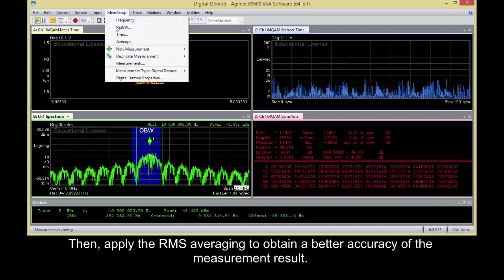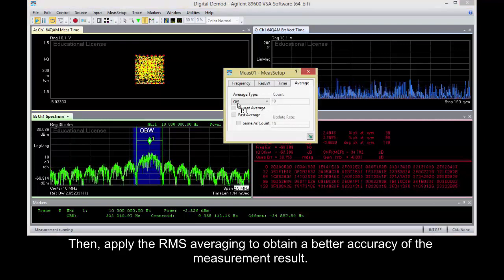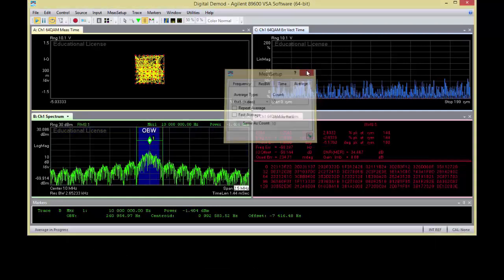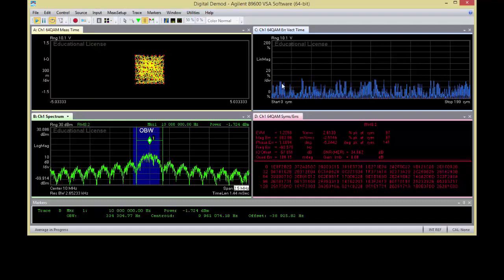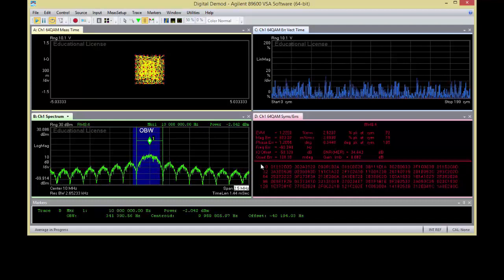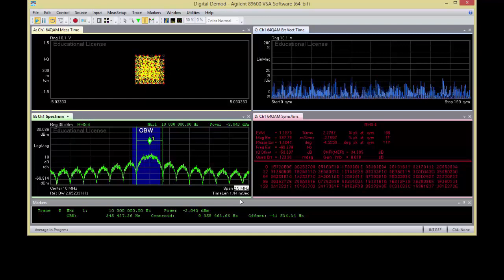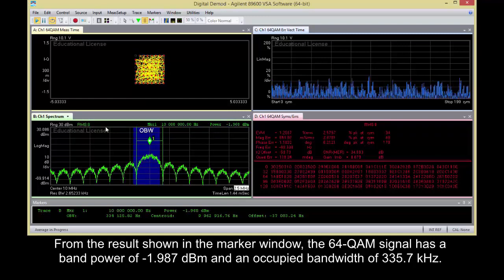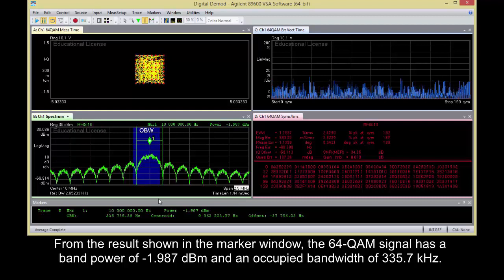Then apply the RMS averaging to obtain a better accuracy of the measurement result. From the result shown in the marker window, the 64QAM signal has a band power of minus 1.987 dBm and an occupied bandwidth of 335.7 kHz.